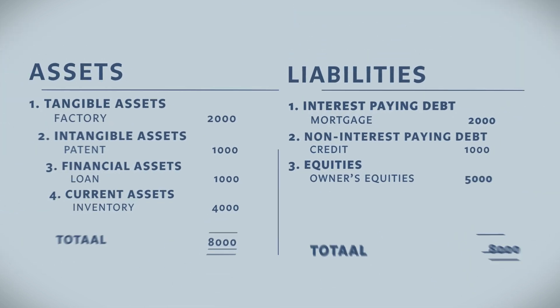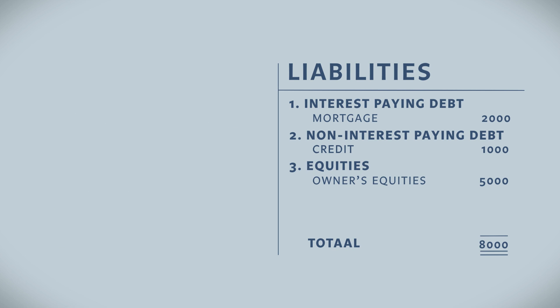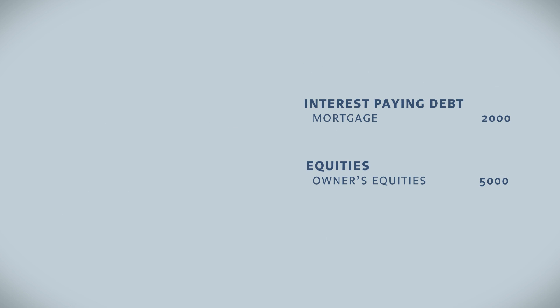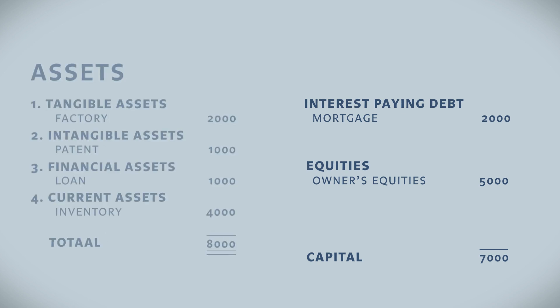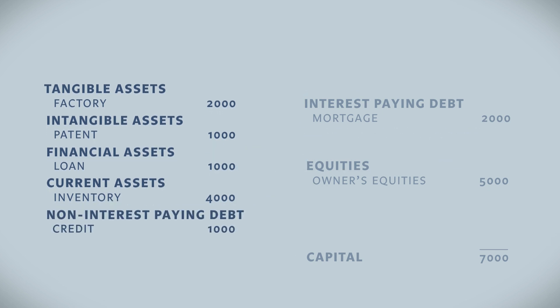Back to step number one. Starting with the right-hand side, the definition of capital is the amount of capital that the company owes to interest-paying debt holders plus equity. In total this is 7000. To get the capital on the left-hand side, one needs to move the non-interest paying debt from the right to the left-hand side.